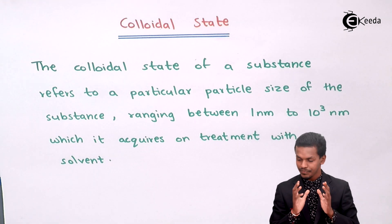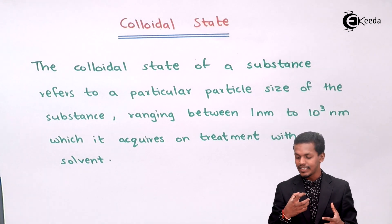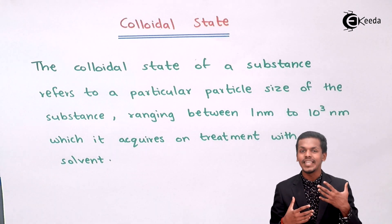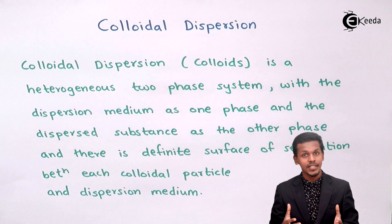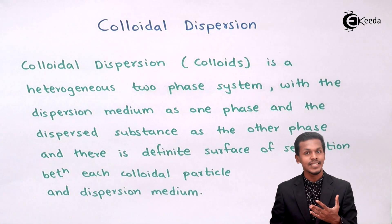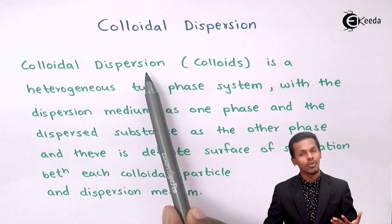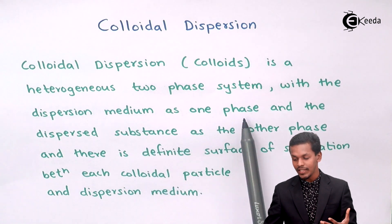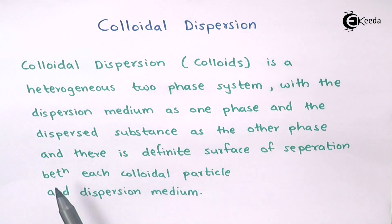The Colloidal State is dissolved or present in a particular solvent, and that forms a Colloidal Dispersion. Colloidal Dispersion, also known as a Colloid, is a heterogeneous two-phase system with the dispersion medium as one phase and the dispersed substance as the other phase. There is a definite surface of separation between each colloidal particle and the dispersion medium.